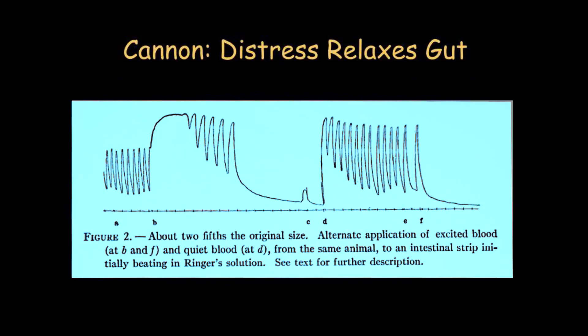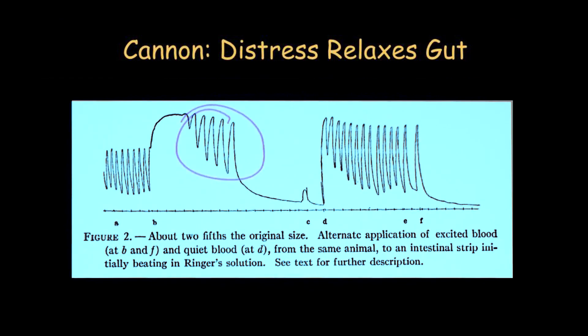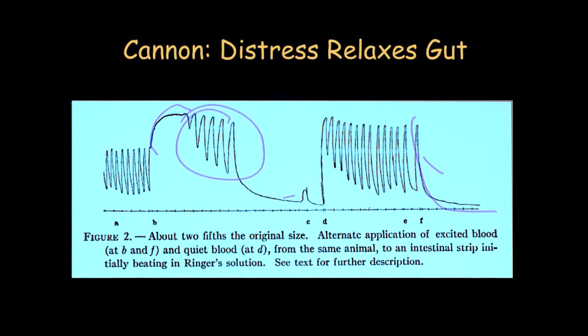What that means is it's not correct to simply say that in stress you get your catecholamines pumping. This is a direct illustration from Cannon's work that explains the SOTAS story. Remember the blood of the cat exposed to a barking dog — he called it 'excited blood.' These are spontaneous gastrointestinal strip contractions, and you can see that application of the excited blood, marked here at B and F, eliminated those contractions. That was the first demonstration of distress-induced adrenaline release by bioassay.